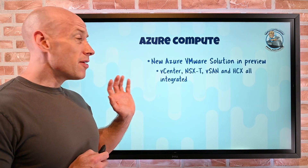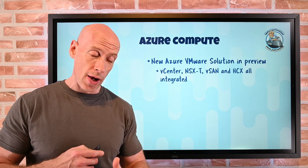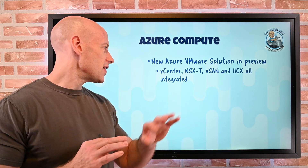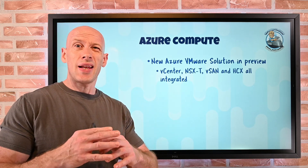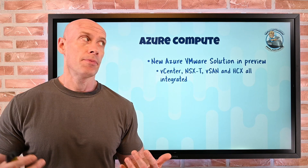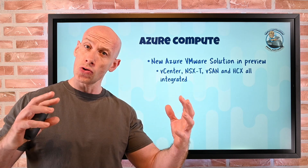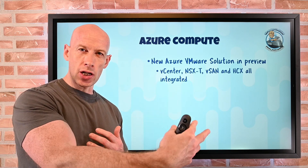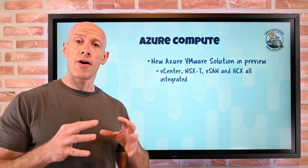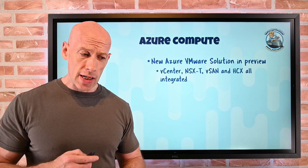Moving on to what's new. In the Azure compute world, there is a new Azure VMware Solution. This is now a first-party offering endorsed by VMware. It's fully compatible with vSphere, vCenter, and NSX-T — that's the entire layer 2 to layer 7 virtual networking stack. We have vSAN technology that takes local storage and makes it appear as shared storage. And then HCX enables application migrations, functioning almost like a bulk live migration capability. All of these are integrated with the solution.